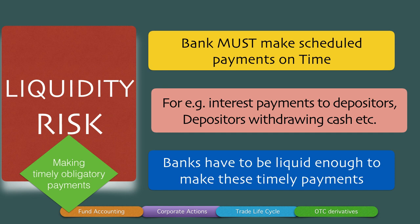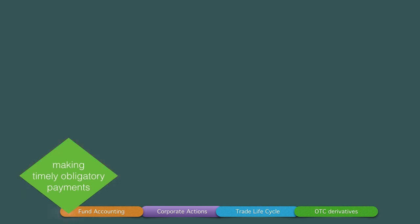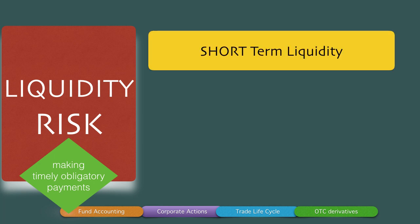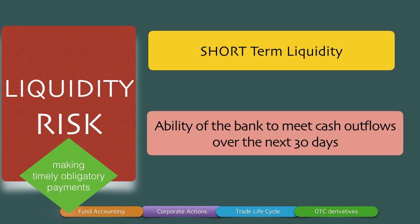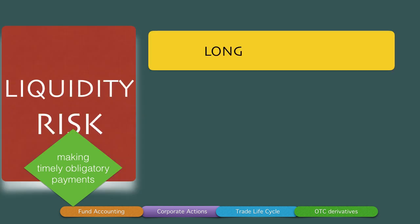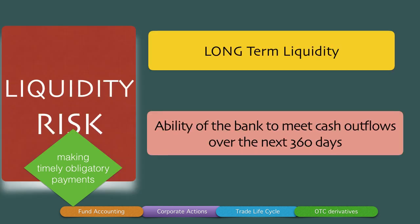Because timely payment is such a strong essence of liquidity, we define liquidity in two durations. Short-term liquidity is the ability of the bank to meet cash outflows over the next 30 days, whereas long-term liquidity is the ability of the bank to make cash outflows over the next 360 days. Since timely payments are so central to liquidity management, we call them short-term liquidity and long-term liquidity respectively.